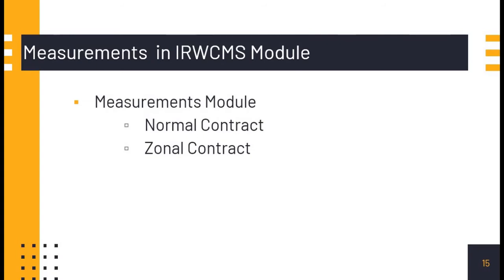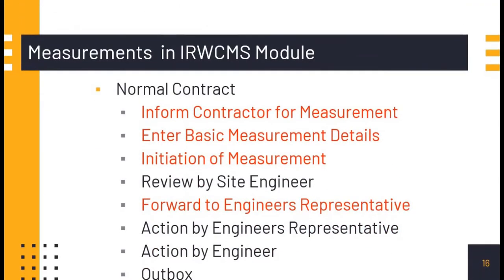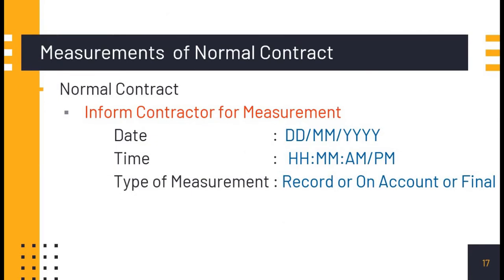In the IRWCMS measurements module, we have normal contract as well as zonal contract. For normal contract, the steps are: inform contractor for measurement, enter basic measurement details in the module, initiate the measurements, review by site engineer, forward to engineer's representative, action by engineer's representative, and action by engineer. The steps highlighted in red are carried out by the SSE or JE. These four are the most important ones for recording measurements in the IRWCMS module.